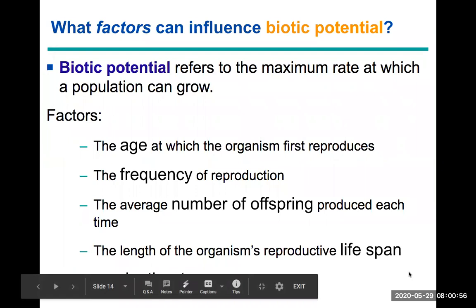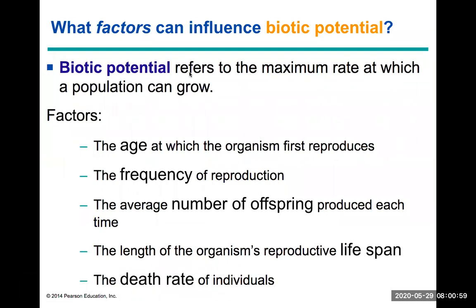There is something known as biotic potential, which refers to the maximum rate at which a population can grow. Factors affecting this include the age at which an organism first reproduces, how often it reproduces per year, and the length of its lifespan. In humans, menopause limits the prime reproductive years during which there is a higher chance of creating offspring.